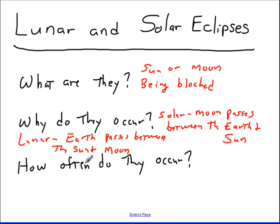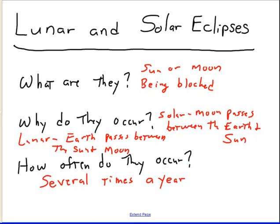How often do they occur? Usually several times a year. It will seem like much less than that, especially for solar eclipses. The problem with solar eclipses is that they're only visible from a limited part of the earth's surface.